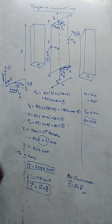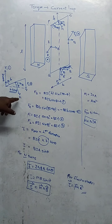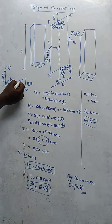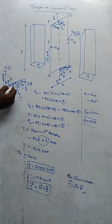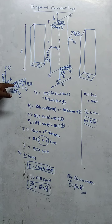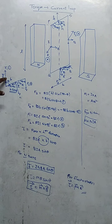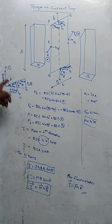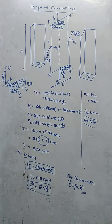The torque is obtained using the formula of force times perpendicular distance. To find the perpendicular distance, the angle is 90 minus theta. If this angle is 90 minus theta, then B makes an angle theta with the vertical. So the component along the coil axis is B cos θ, and the perpendicular component is B sin θ. We take B sin θ as the perpendicular distance and substitute to get the torque.